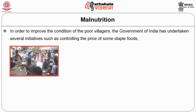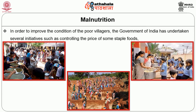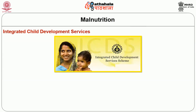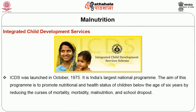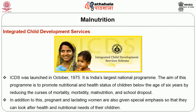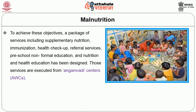In order to improve the condition of poor villages, the Government of India has undertaken several initiatives such as controlling the price of some staple food, introducing food-for-work programs, employment guarantee programs, and midday meals for school-going children. Apart from these, the largest nutrition supplement program is the Integrated Child Development Services. ICDS was launched in October 1975 and is India's largest health program. Its aim is to promote the nutritional health and status of children below the age of 6 years by reducing the incidence of mortality, morbidity, malnutrition, and school dropout. Pregnant and lactating women are also given special emphasis. A package of services including supplementary nutrition, immunization, health check-up, referral services, preschool, non-formal education, and nutrition and health education has been designed.